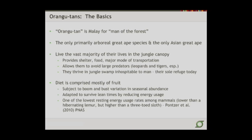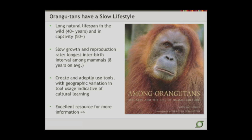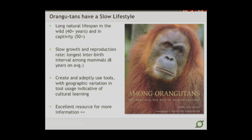The diet is composed mostly of fruit, which means they're subject to boom and bust variation and seasonal abundance. They have an ability to reduce their energy usage in addition to having a fairly low-key lifestyle in general, and in particular a very low resting energy usage rate among mammals. The orangs have the longest natural lifespan both in the wild and captivity, and also have a very slow growth and reproduction rate — the longest inter-birth interval known among mammals, of about eight years average duration. The orangs are able to create and adeptly use tools, and there's actually a geographic variation in tool usage, which is thought to be more of a cultural learning aspect.